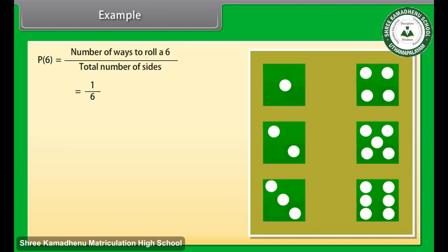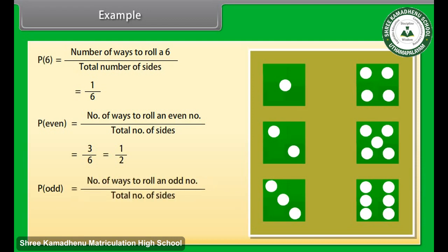Now we can see that the way to roll even numbers is 3. We can find the probability as P(even) equals number of ways to roll an even number upon total number of sides, which is equal to 3 upon 6, which is 1 upon 2. And way to roll odd number is 3. So the probability is P(odd) equals number of ways to roll an odd number upon total number of sides, which is equal to 3 upon 6, which is 1 upon 2.